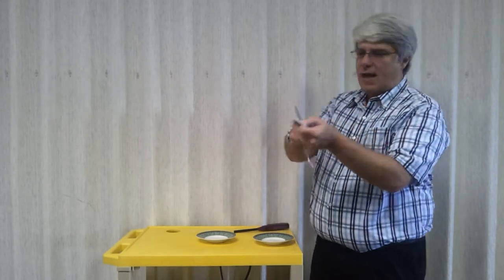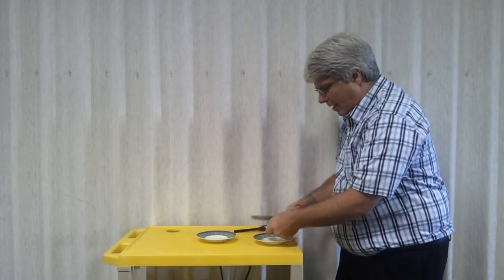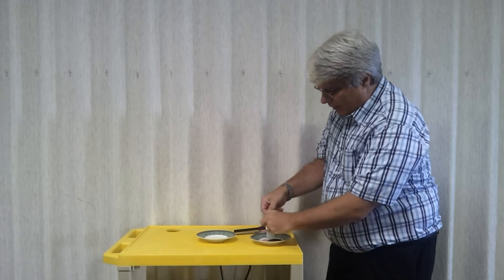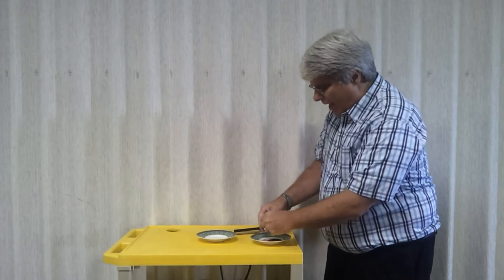So I'm going to take the teabag and I'm going to cut it right at the top here, and then dump all the tea out because I don't like tea. Okay, so now I have an empty teabag and I'm going to open it up so that it's a cylinder.